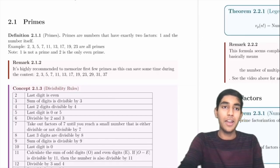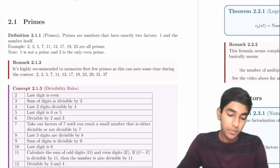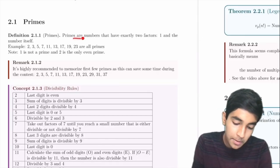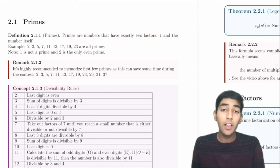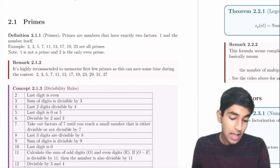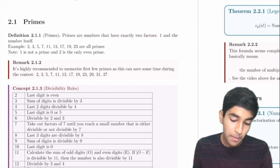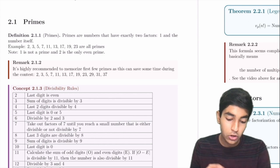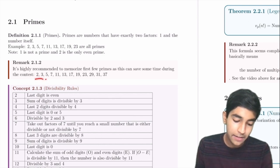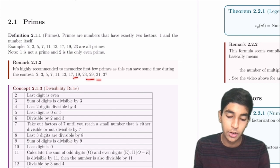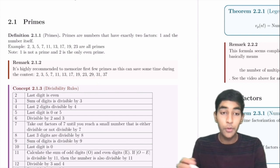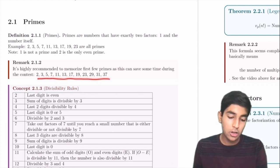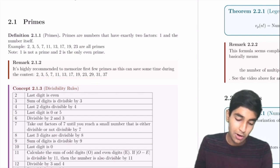Now let's move on to number theory. Primes are numbers divisible only by 1 and themselves — they have exactly two factors. It's recommended to memorize the first few primes: 2, 3, 5, 7, 11, 13, 17, 19, 23, 29, 31, 37.